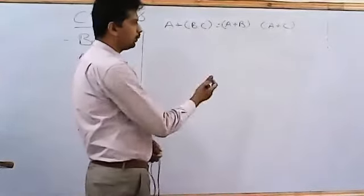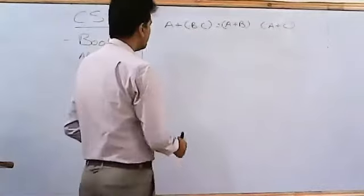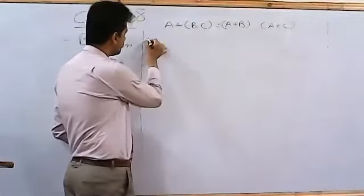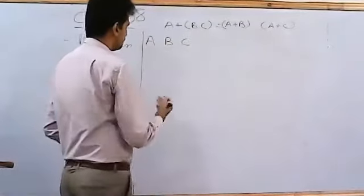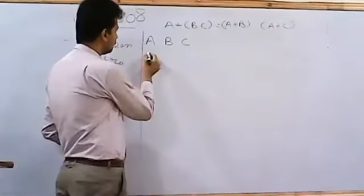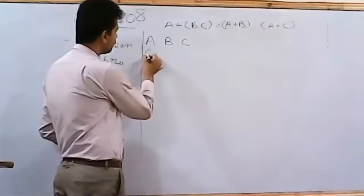Now, I would have to make columns for both sides. But first of all, let's make the basic columns, that is A, B, and C. As we have three variables, so we are going to have to make eight rows.